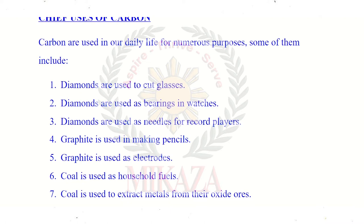Record player needles are made of diamond. The leads of pencils are made from graphite, which is carbon. Electrodes, like in batteries, are made of carbon. Coal is used to extract metals from oxide ores.